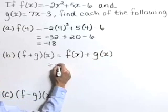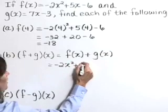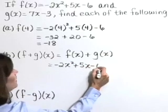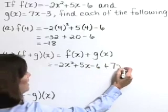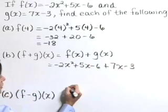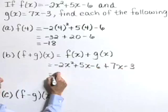f of x is negative 2x squared plus 5x minus 6. Add that to g of x, which is 7x minus 3.